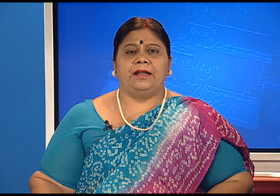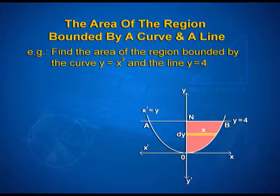Now let us look into the area of the region bounded by a curve and a line. Here, we will learn to find the area of the region bounded by a line and a circle, a line and a parabola, and a line and an ellipse. Let us see an example: find the area of the region bounded by the curve y = x² and the line y = 4.